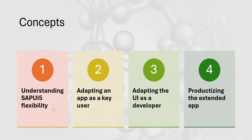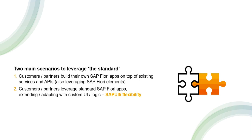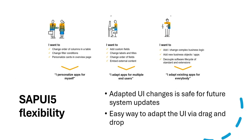Today I will explain SAP UI Flexibility — Adapt UI as a key user and Adapt UI as a developer. Before starting, let's understand in which cases we extend a Fiori application. As a developer, we know there are thousands of standard Fiori applications, and we extend them based on customer requirements. SAP UI Flexibility has three sections: end user, key user, and developer.